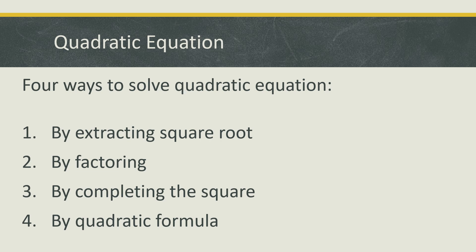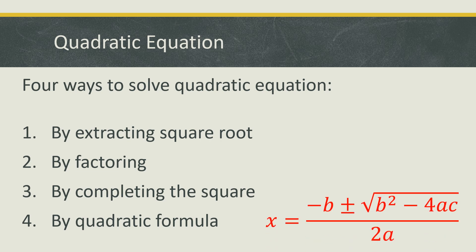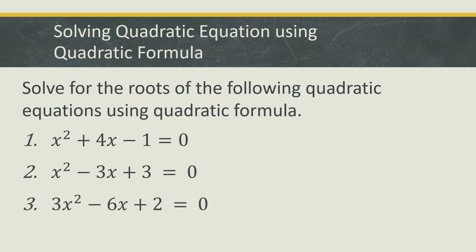There are four ways to solve a quadratic equation: first by extracting the square root, next by factoring, the third one is by completing the square method, and the last one is using the quadratic formula. We already discussed the three methods in some of our videos, and this time we will focus on the quadratic formula: x is equal to negative b plus or minus the square root of b squared minus 4ac, all over 2a. We use this formula when the given general trinomial is not factorable.